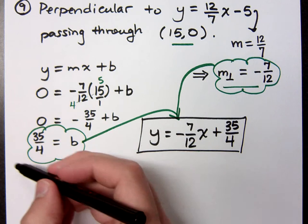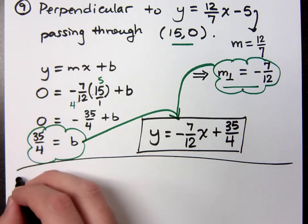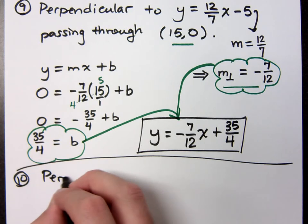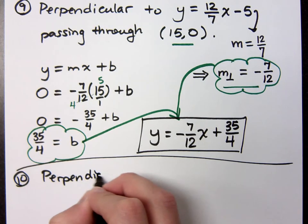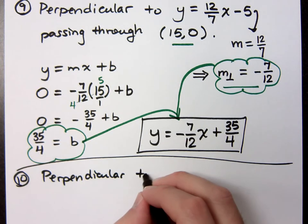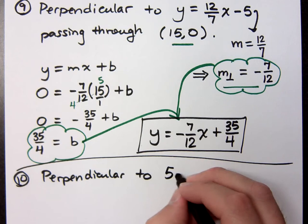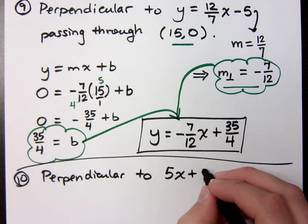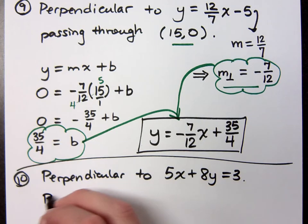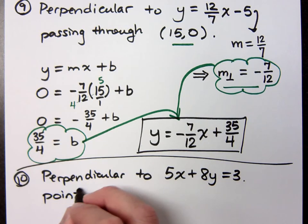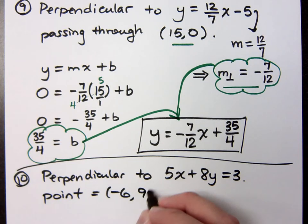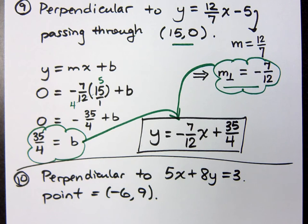Well, let me show you another one, another perpendicular one. Suppose I want it to be perpendicular to, you know, let's use that same equation that we have in number 8. 5 x plus 8 y equals 3. And let's talk about the same point that we went through before. The point was equal to negative 6, 9. Do you think I'm going to have the same equation here if I'm perpendicular?